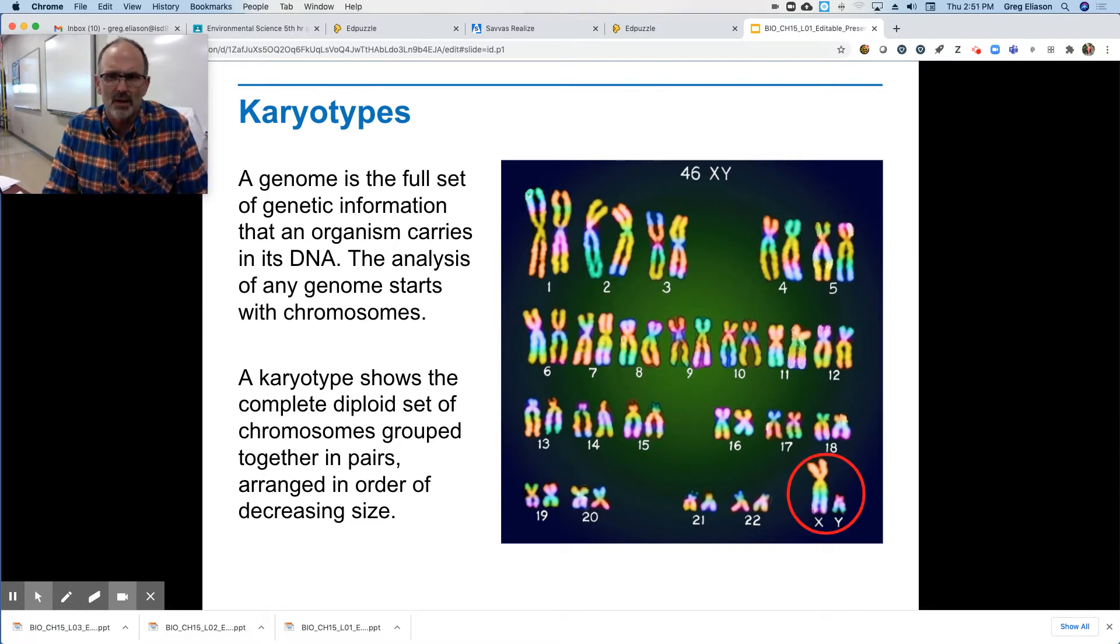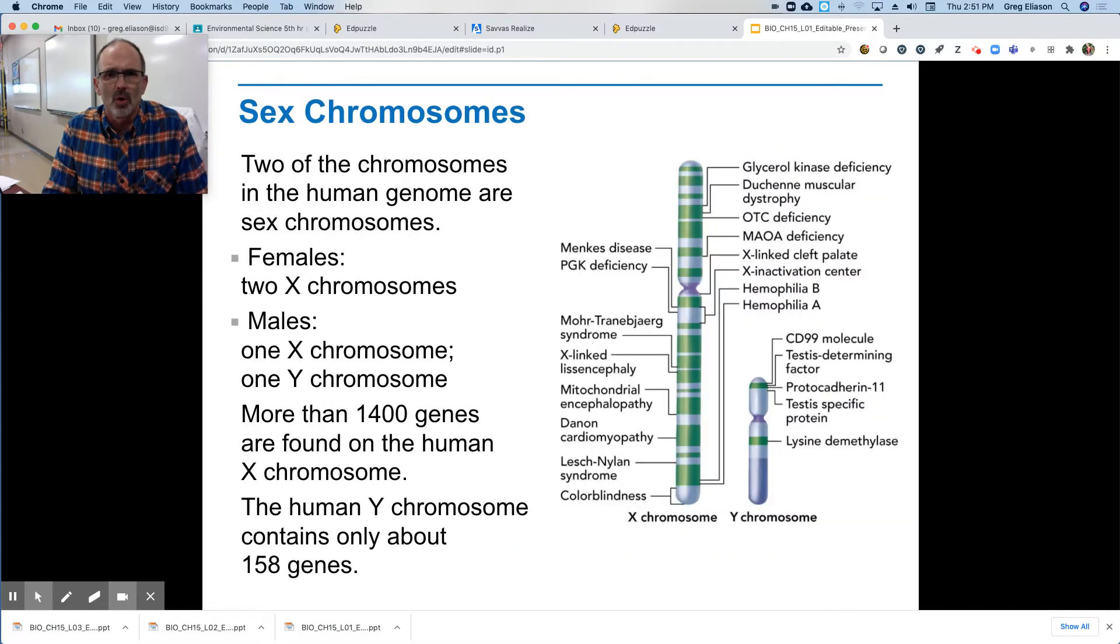So there's our X and Y. So ultimately we call those, as it says, two of the chromosomes are sex chromosomes. So the females have two X chromosomes and the males have one X and one Y. There are more than 1,400 genes on the X chromosome, but the human Y chromosome contains only about 158 genes.